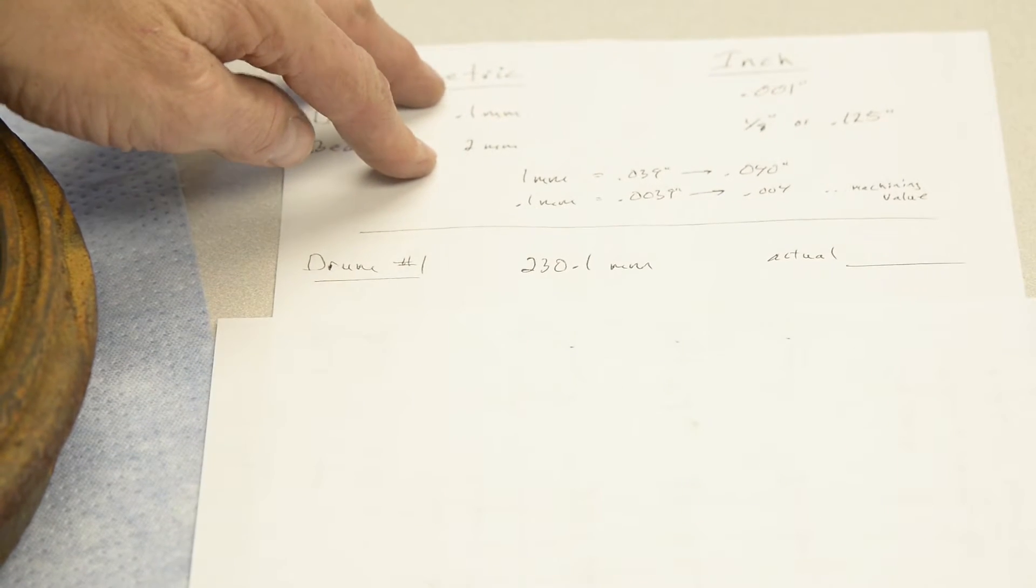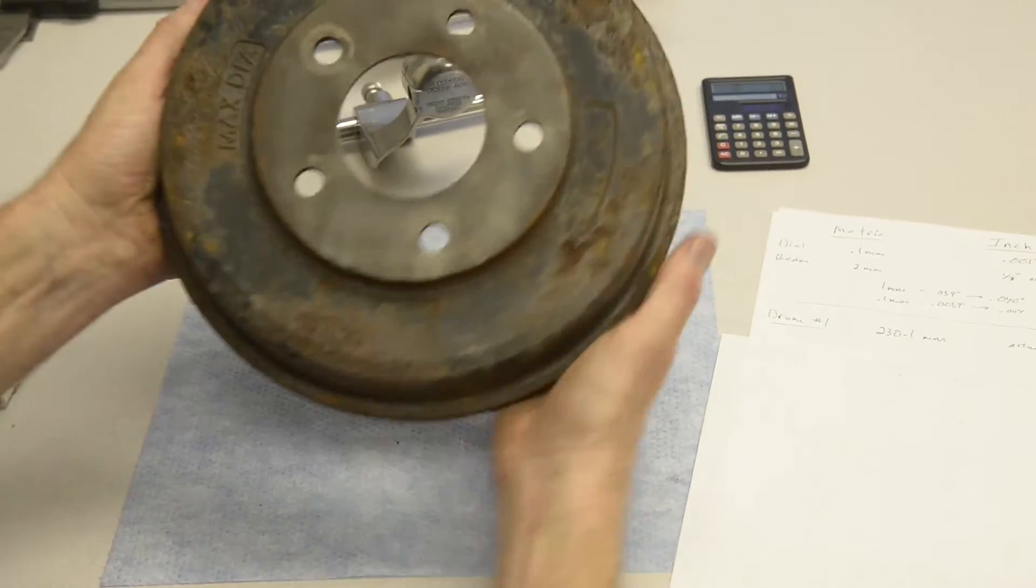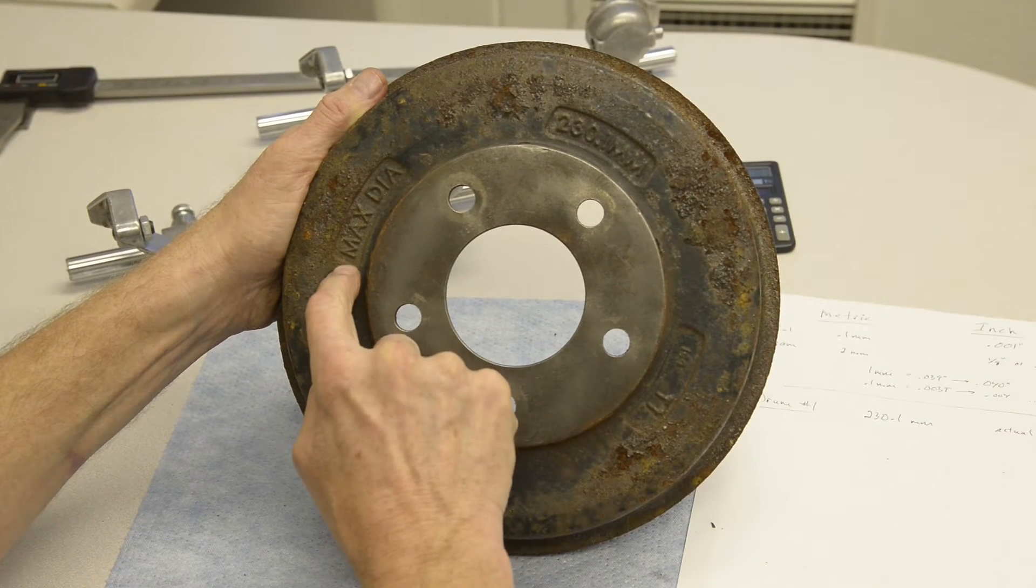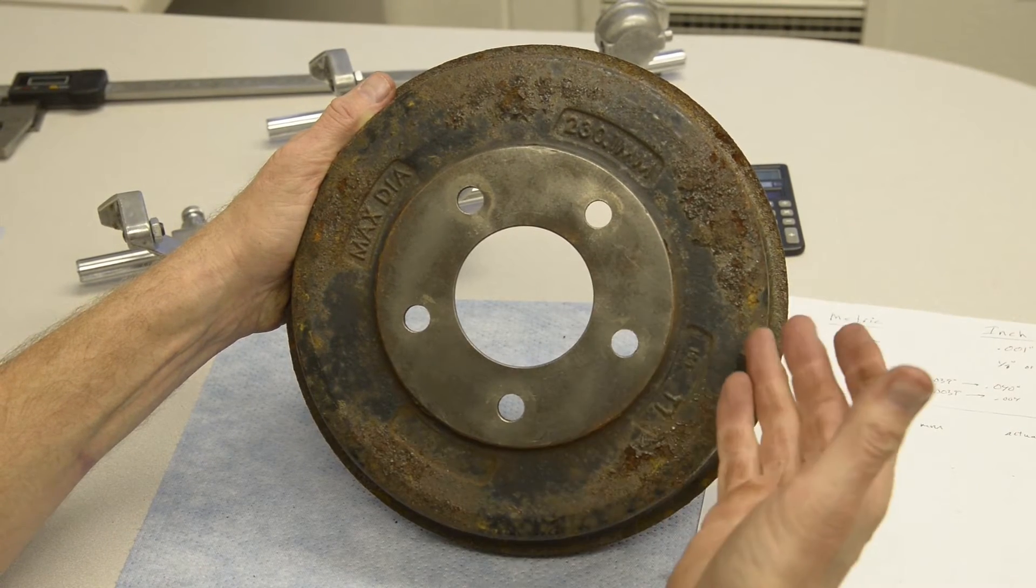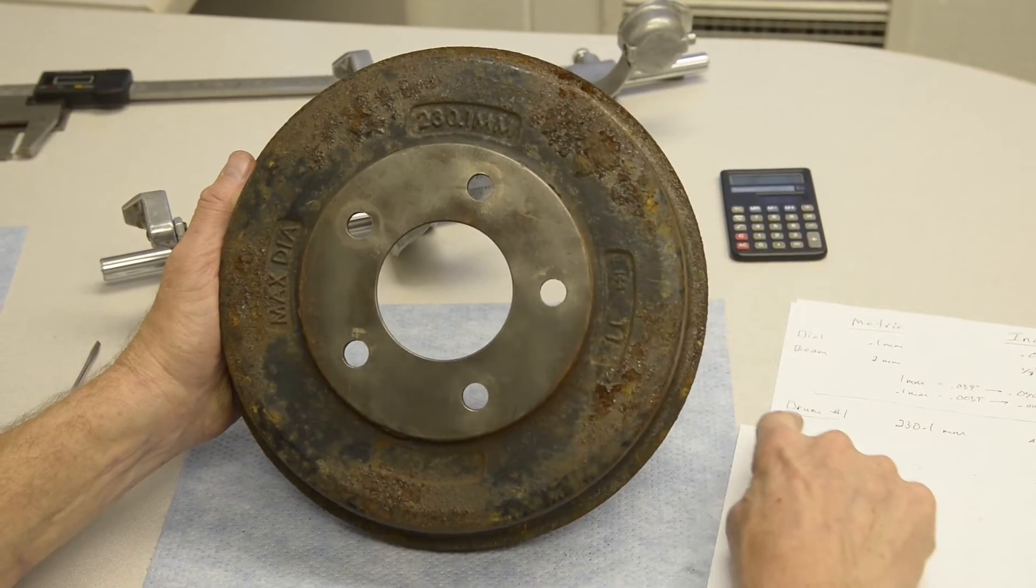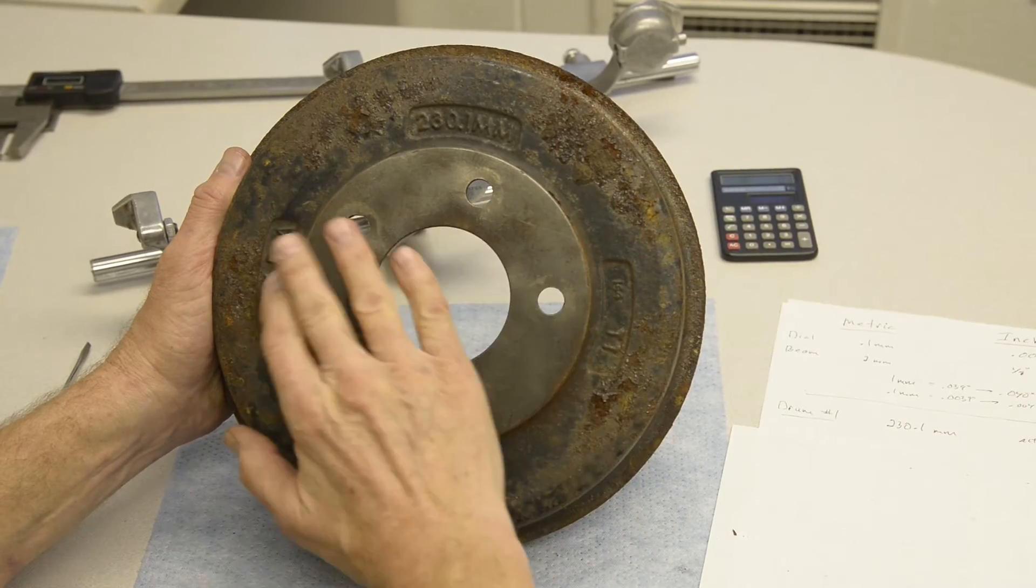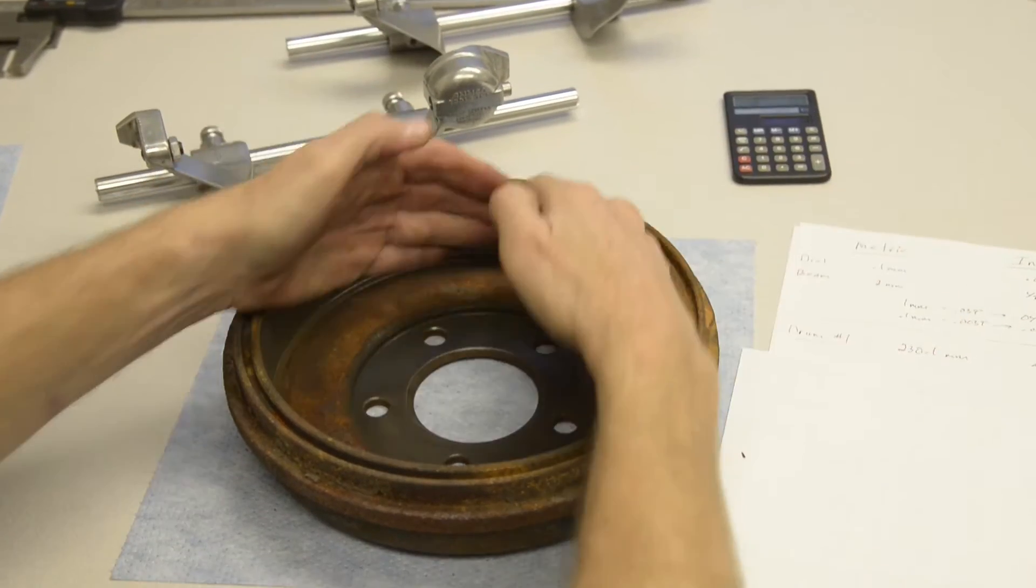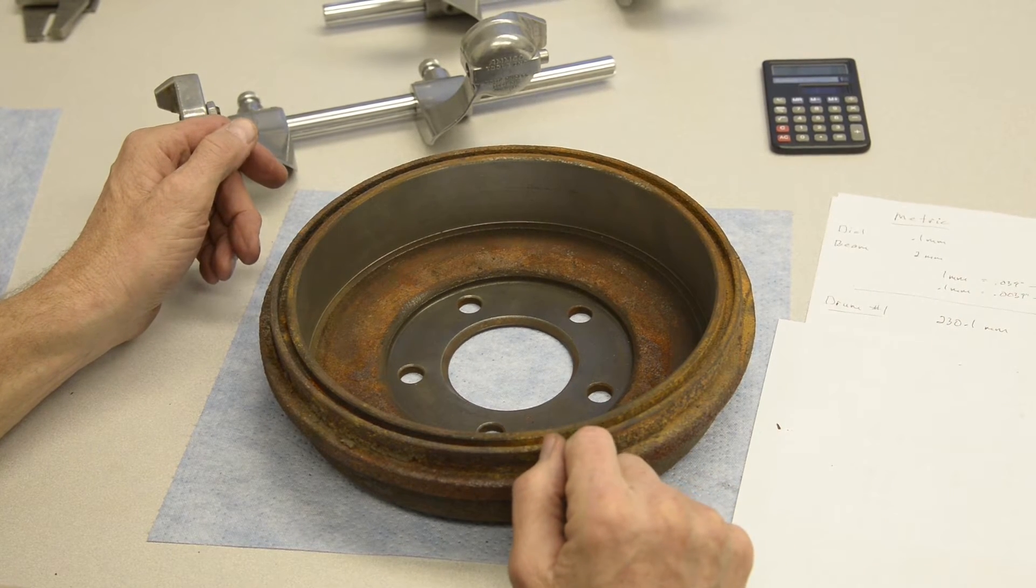Let's get measuring. I'm going to start off with brake drum number one. Most drums have an indication on them, meaning a maximum diameter that the drum should never exceed because of wear or machining. So this drum is 230.1 millimeters. Let's find out its actual size, because what this maximum diameter value means is this surface, or this diameter, should never exceed or go beyond 230.1 millimeters.